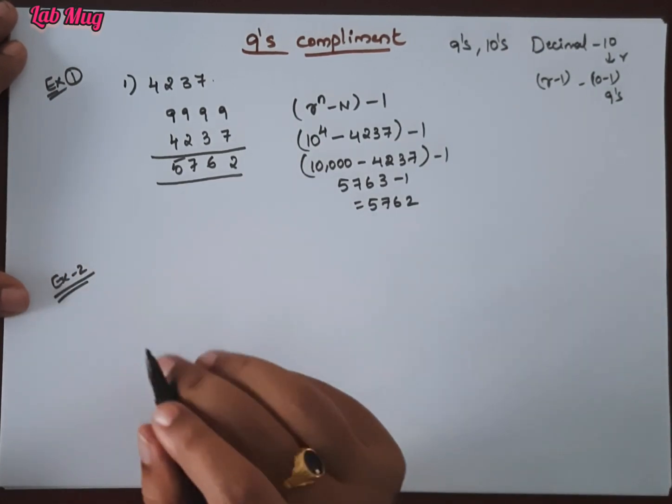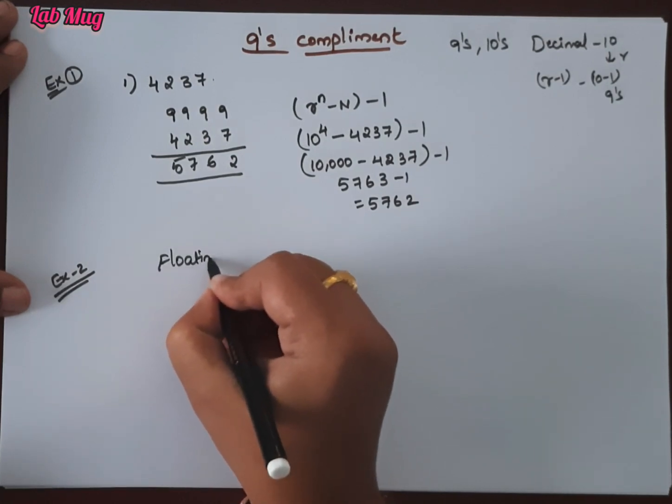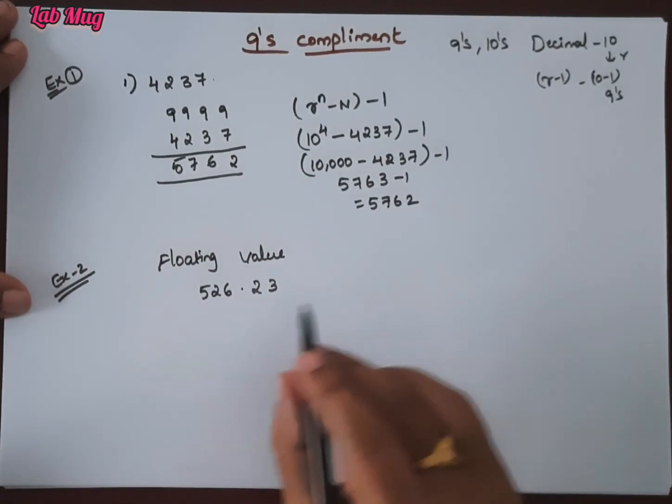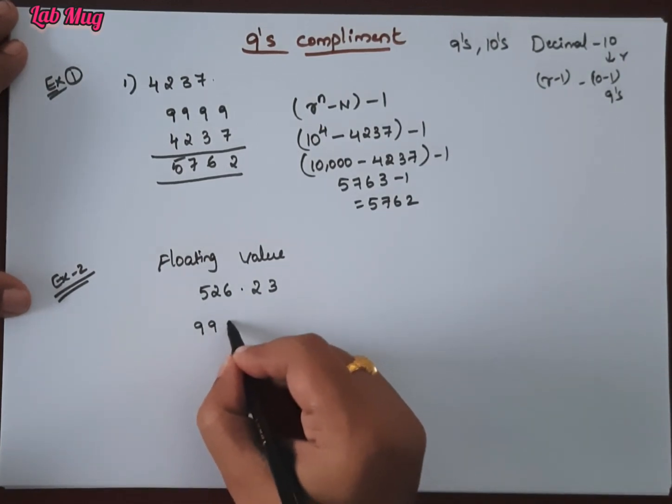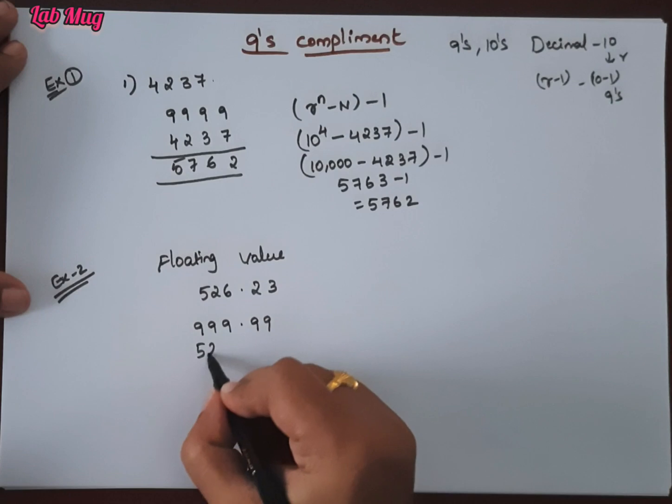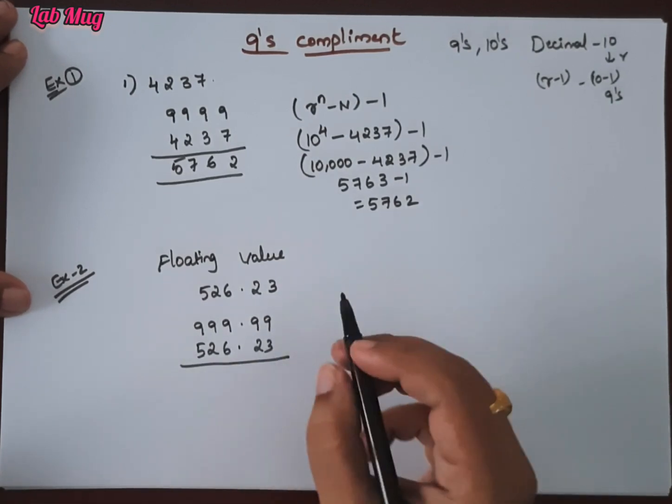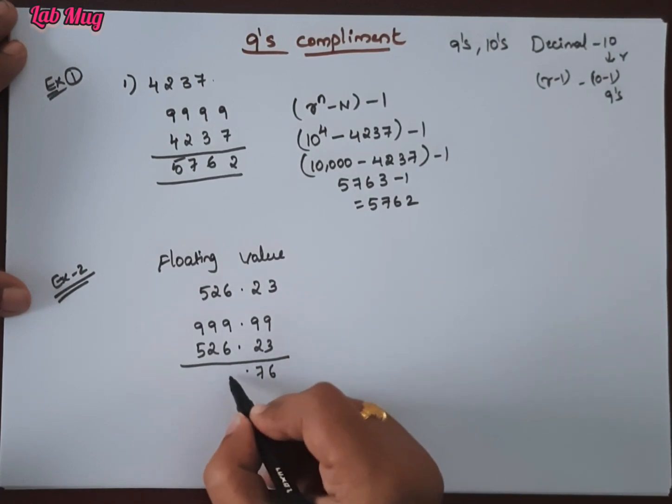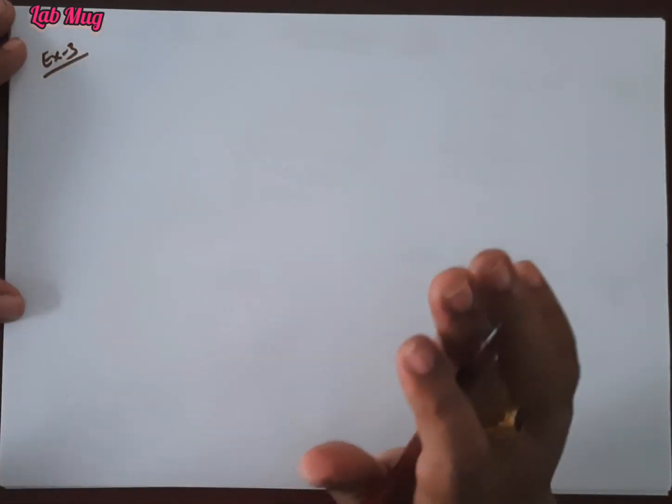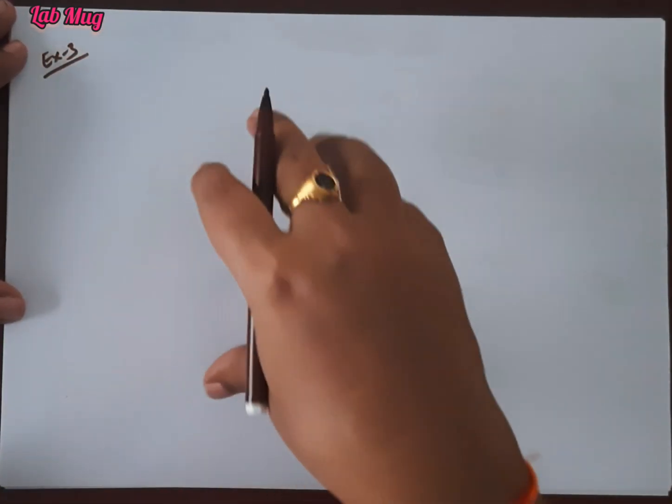Example 2 of 9's complement with floating value. For example, I want to take the number 526.23. Same thing, you can take 9's: 999 for three digits, and 99 for two floating point numbers. Then subtract 526.23 from 999.99, giving 473.76.